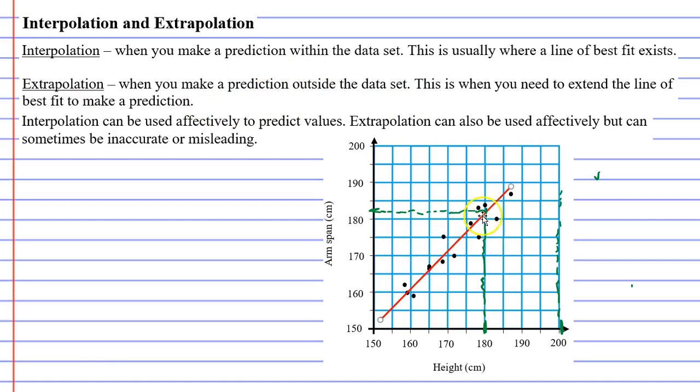So we take our line of best fit and we extend it up here, and now we can figure out our prediction. As we go across, it will probably meet about 204 centimeters for our arm span.